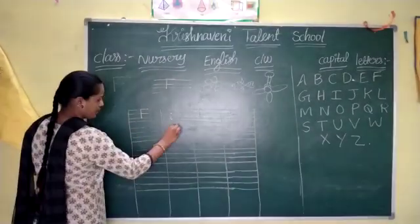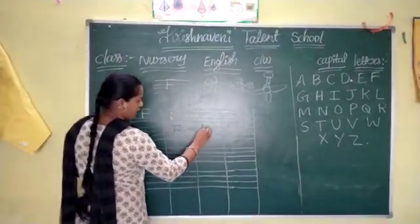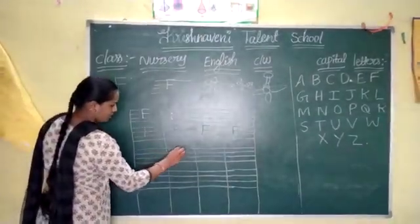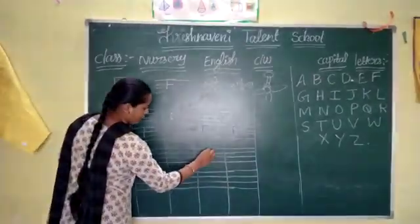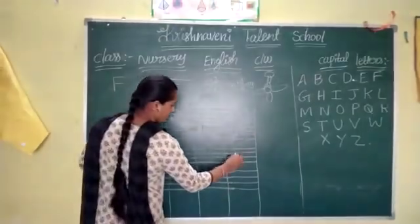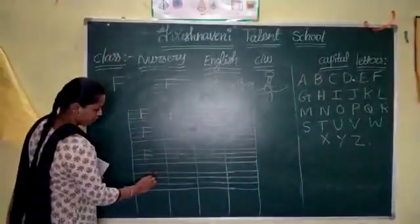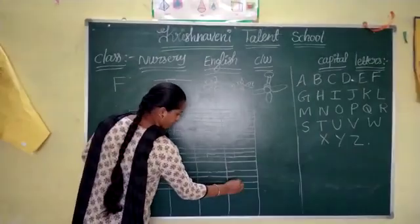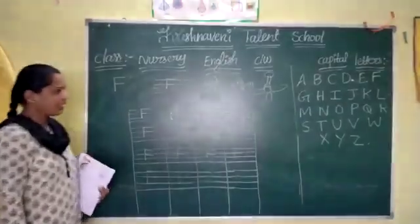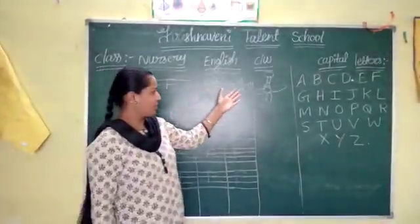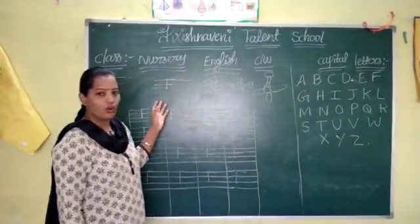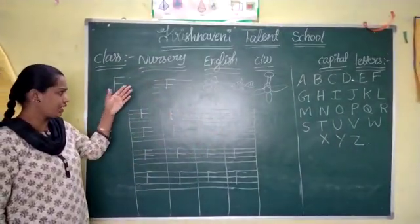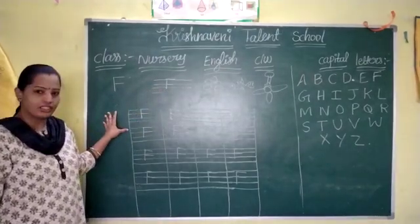This is the letter F. Take one standing line and take two sleeping lines like this. F for Fan, F for Flower, F for Fork, F for Frog, F for Fish. Yes children, like this — how many words will come! F: Flower, Fish, Fan, Frog, Fork.